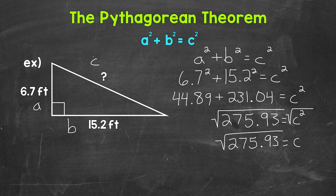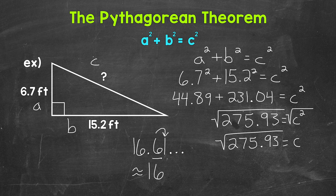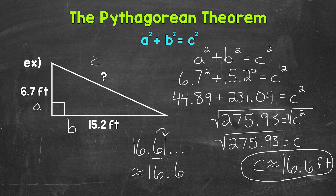The square root of 275 and 93 hundredths is 16.61 and this continues on. There's a 6 in the tenths place with a 1 to the right in the hundredths, so this rounds to, or is approximately, 16 and 6 tenths. So c is approximately 16 and 6 tenths feet. The hypotenuse — the unknown or missing side length of this right triangle — is approximately 16 and 6 tenths feet.